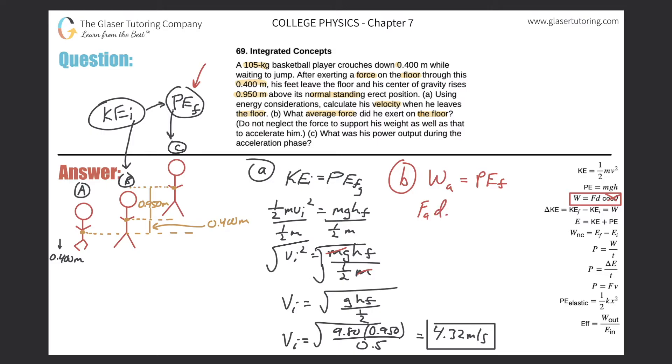This will now equal the potential energy, his final potential energy, which is mg times the difference in height, times his change in height. His change in height was his height final minus the height initial. So we just have to be careful how we plug in the value there.